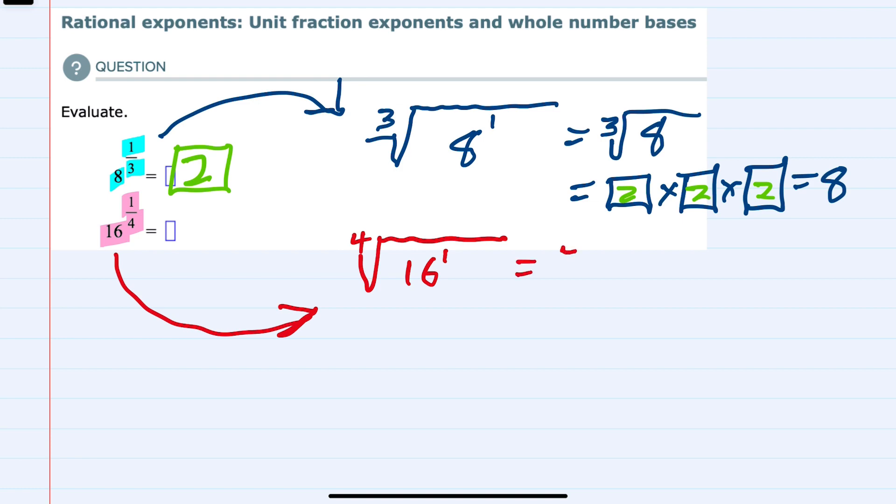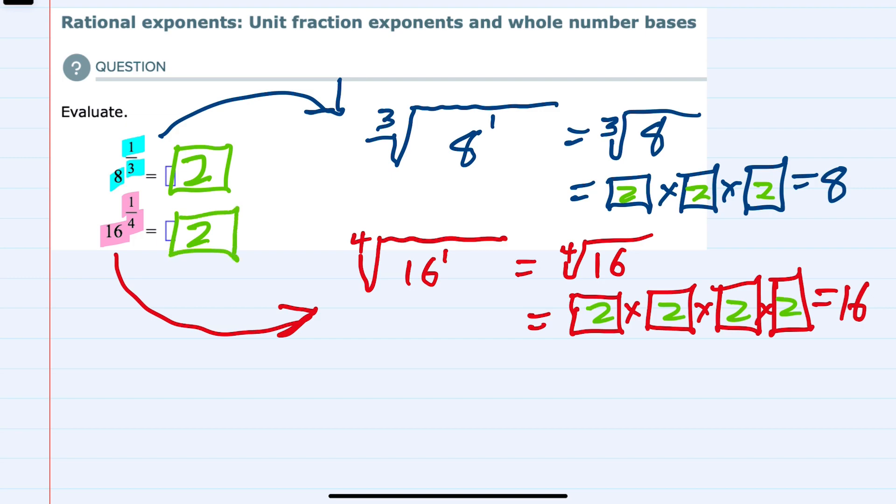Simplifying again, this is the fourth root of 16, which is asking the question, what number, written 4 times and multiplied, equals 16. And here we have 2 times 2 times 2 times 2, that would be 16. So we have the same solution for the second example.